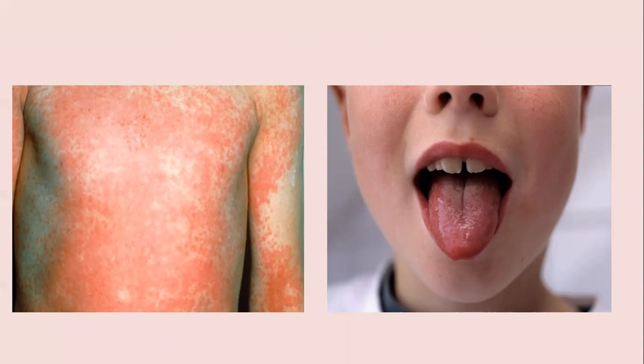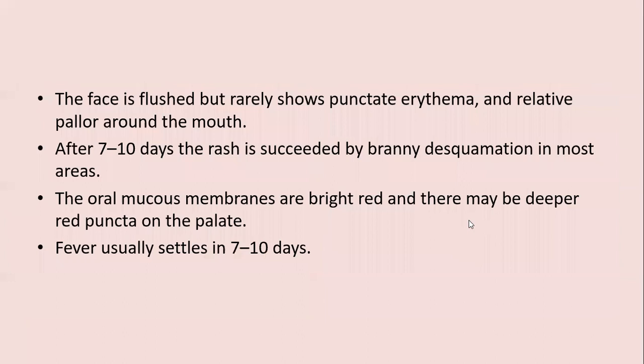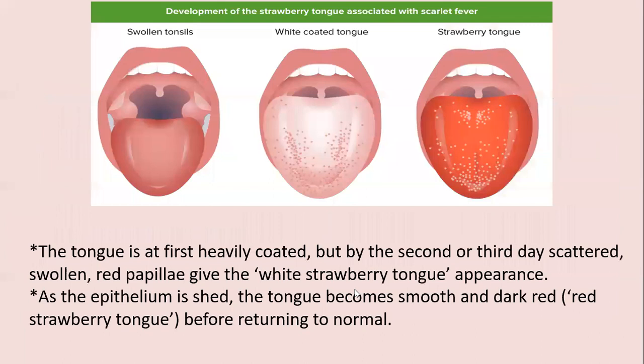The face is flushed but rarely shows punctate erythema, with relative pallor around the mouth. After seven to ten days, the rash is succeeded by branny desquamation in most areas. Oral mucous membranes are bright red with possible deeper red puncta on the palate; fever settles in seven to ten days. The strawberry tongue develops progressively: initially swollen tonsils, then white coating of the tongue, then the coating is shed leaving red raw areas with white papules — this is the strawberry tongue.